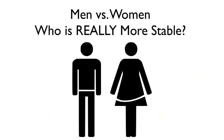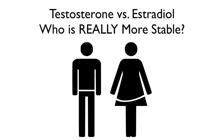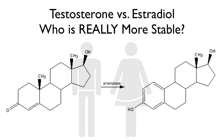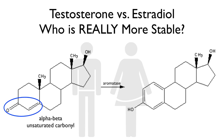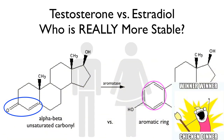Cholesterol is important for us because we build our steroid hormones out of it. Consider testosterone versus estradiol — the most common of the estrogens — who is really more stable? You may be surprised to see how similar testosterone on the left is to estradiol on the right. There's only one real difference between the two. If you know organic chemistry, testosterone has an alpha-beta unsaturated carbonyl, while estradiol has an aromatic ring. The aromatic ring is a more stable configuration, so at this level, estradiol is actually more stable.